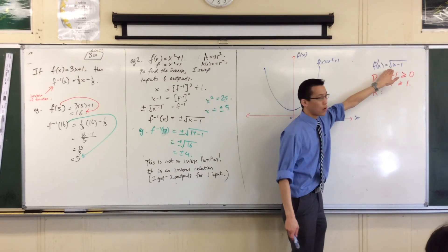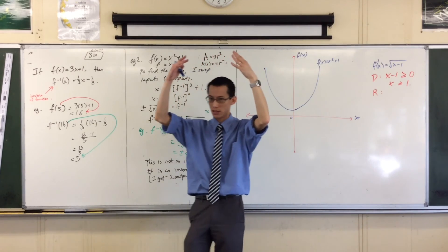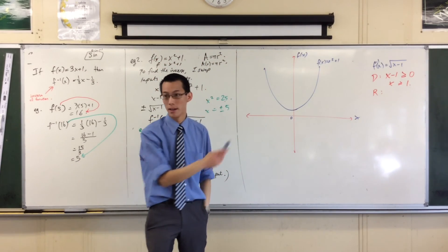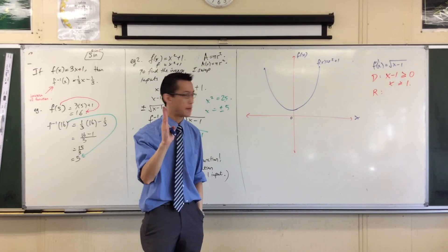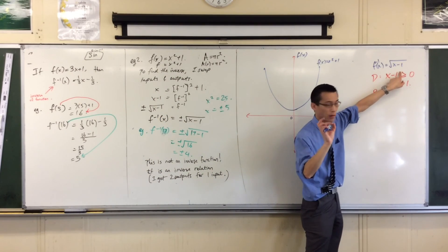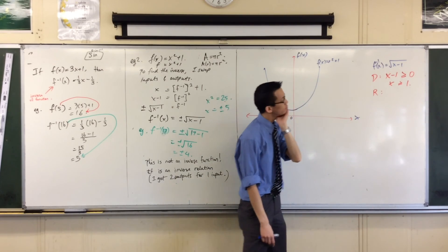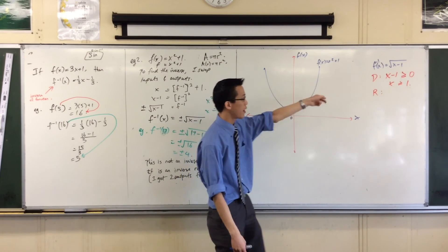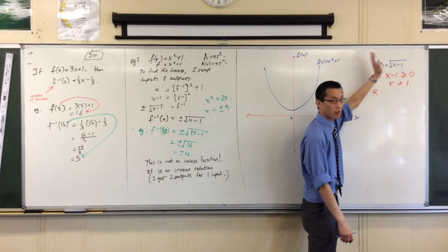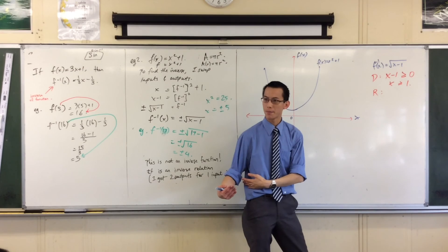Like, when I put in x equals 1, that's the edge of my domain, I get the square root of 1 minus 1, which is 0. When I put in x equals 5, I'm going to get the square root of 5 take away 1, which is square root of 4. So, that'll be 2. I'm getting bigger, aren't I? I'm never getting smaller.